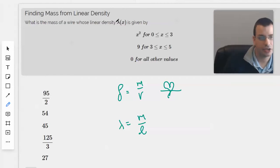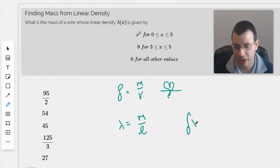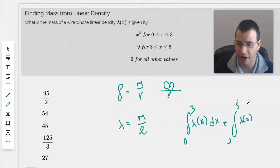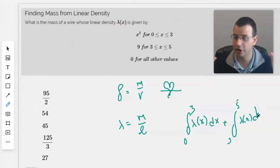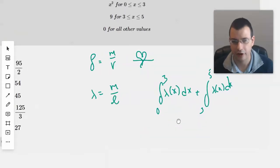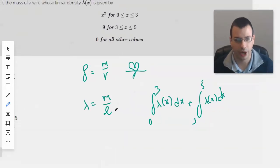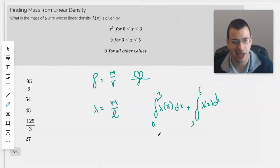We're going to integrate λ(x)dx from 0 to 3 plus λ(x) from 3 to 5, and that should give us our mass for the wire. Then 0 for everything else. The integral of 0 is a constant, but with limits of integration we'll get 0, so it's fine.